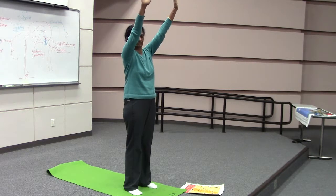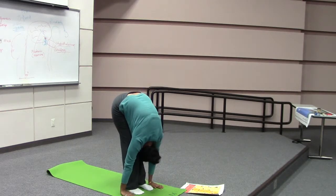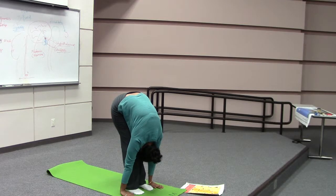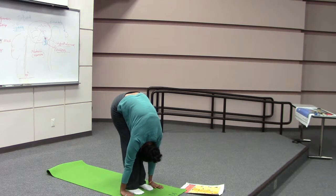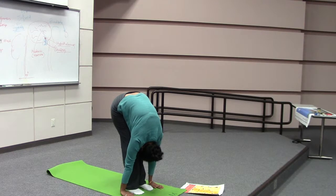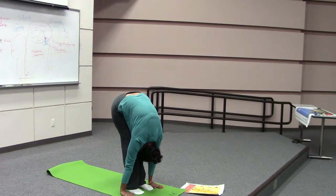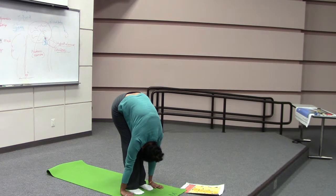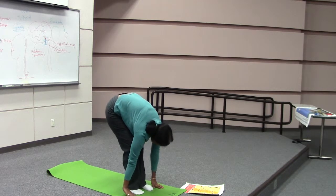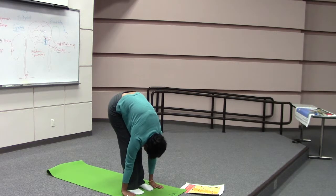The second is Padhastanasana. Mantra Om Bhuvah. Exhale, bend the hip and bring both hands beside the feet on the floor. Try to touch the head with knees, keep knees straight. This practice removes gas, strengthens Ida and Pingala, reduces extra fat around the waist. The third asana is Vajrasana, makes you stronger. Mantra Om Swaha.